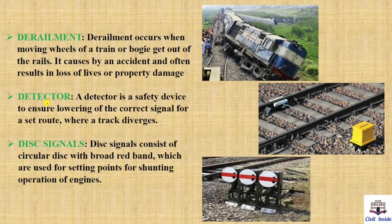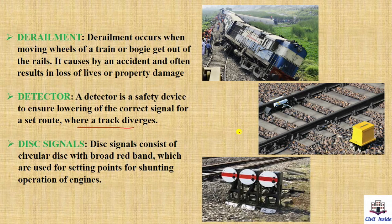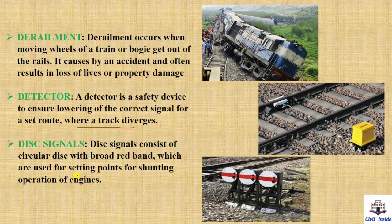Next, detector. A detector is a safety device to ensure lowering of the crack signal for a set route where a track diverges, so the driver is ensured that the signal condition is correct before proceeding. Next, disc signals. Disc signals consist of a circular disc with a broad red band, which are used for setting points for shunting operations.